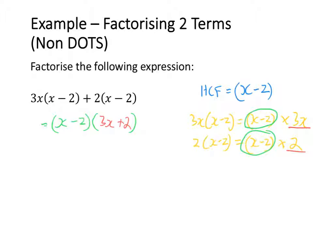Noting that the sign from the original expression carries forward into the set of brackets. So the factorised form of 3x(x minus 2) plus 2(x minus 2) is equal to (x minus 2)(3x plus 2). Those are three examples of how to factorise an expression involving two terms that we cannot make a difference of two squares.